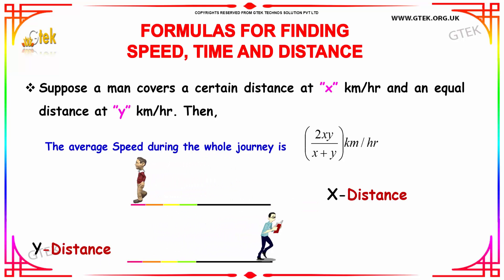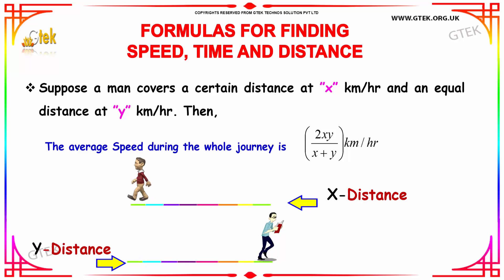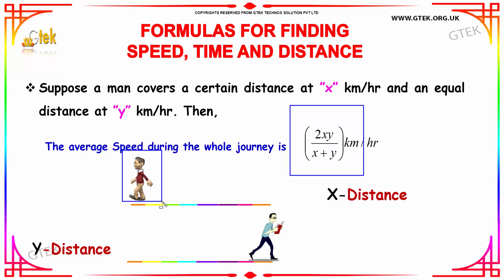Now let's see the other formulas. Suppose a man covers a certain distance at x km per hour and an equal distance at y km per hour, then the average speed during the whole journey is 2 times x times y divided by x plus y km per hour. So considering this man, he started walking on the road at x km/h and walking on the street at y km/h, so the average speed is 2xy divided by x plus y km per hour.